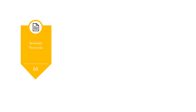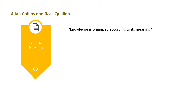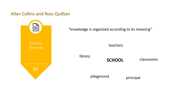The third one is semantic networks. It is proposed by Alan Collins and Ross Quillian. In this network, the knowledge is organized according to its meaning. Consider the example below to better understand this. When we hear the word 'school,' it activates different concepts such as teachers, classroom, principal, playground, or library. Since these ideas are organized together, it becomes easier to recognize and retrieve information.